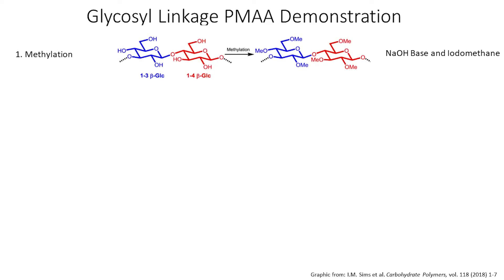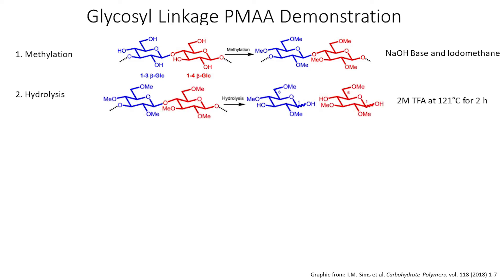This method involves four steps. The first step is methylation. This step replaces hydroxide groups with O-methyl groups leaving the linkages between sugars intact. Second, the hydrolysis. We use 2-molar trifluoroacetic acid or TFA to break the bonds between sugars leaving a hydroxide group where the linkages were.